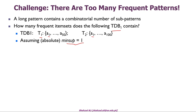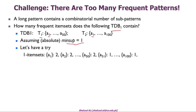The question is: how many frequent items does it contain? For frequent 1-item sets, A1 occurs twice — once in T1 and once in T2 — so its support count is 2. Similarly, A2 and A3 each have support count 2. Up to A50, all items have support count 2.